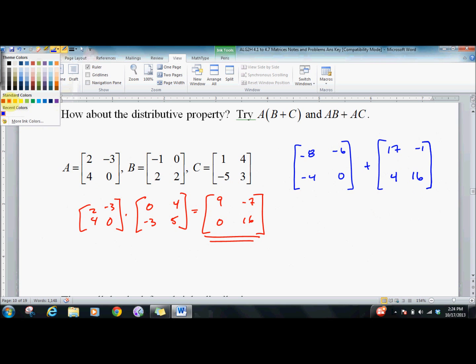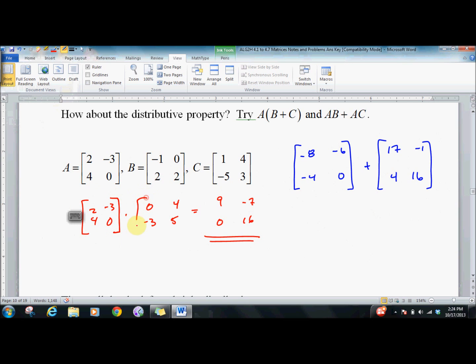And just because I'm a perfectionist I can redraw all these. So we add these together and we're going to get the same thing. Nine, negative seven, sixteen, zero. So the distributive property works.